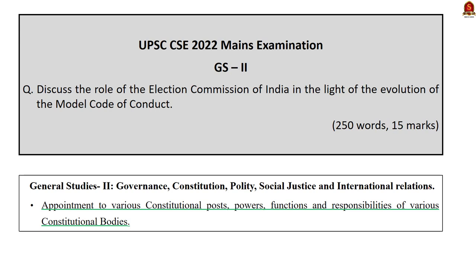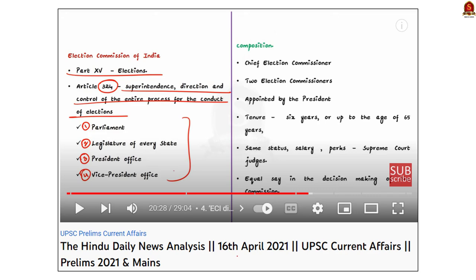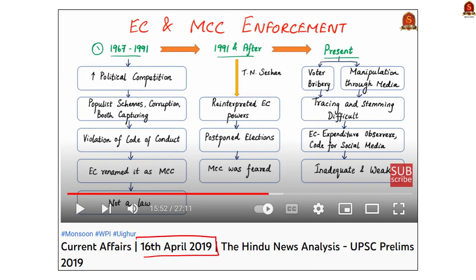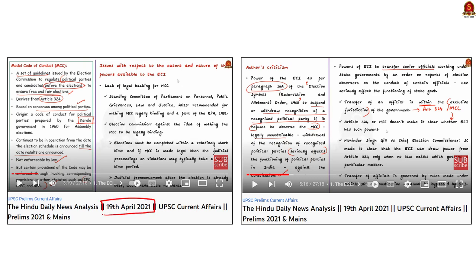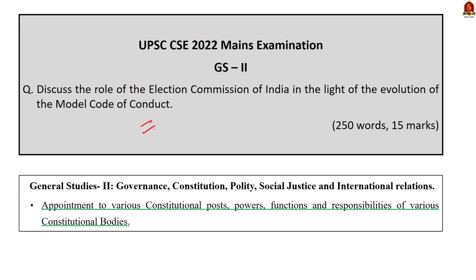Question number 15 in GS Paper 2: 'Discuss the role of the Election Commission of India in the light of the evolution of the Model Code of Conduct.' The examiner is asking about the ECI's role in the evolution of the MCC. In the introduction, write about the Election Commission, covered elaborately in our 16th April 2021 Hindu News Analysis. Then in our 16th April 2019 Hindu News Analysis, we covered the evolution of the Model Code of Conduct over the years. Finally, in our 19th April 2021 Hindu News Analysis, we covered the MCC elaborately — its features, issues, and criticism. Content from these three videos is enough to aptly answer this question.